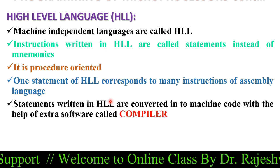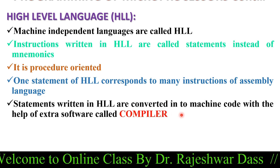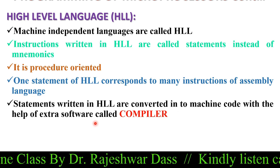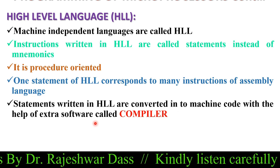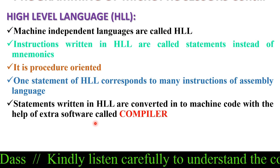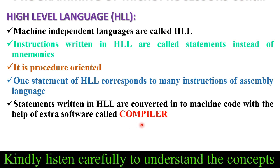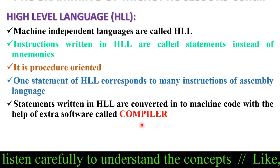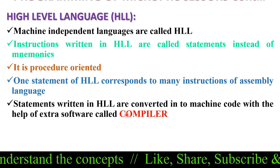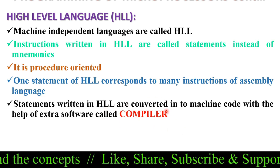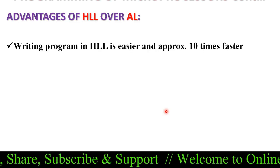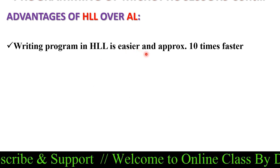Statements written in high level languages are converted into machine code with the help of extra software called a compiler. In the case of assembly language, the converting software is called an assembler, while in the case of high level language it is called a compiler.